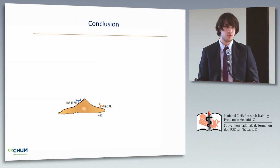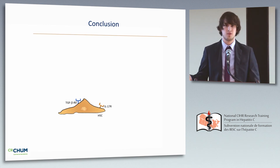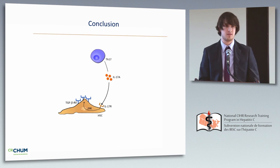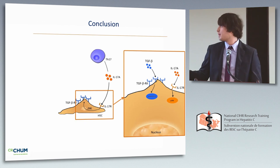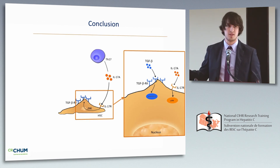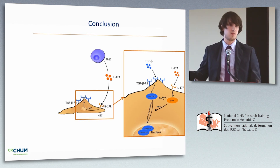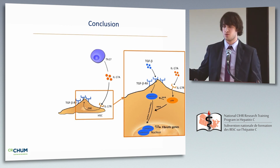In conclusion, we demonstrated that hepatic stellate cells can respond to IL-17A and will upregulate TGF-beta receptor 2 at the cell surface in a JNK-dependent manner. This allows hepatic stellate cells to respond to suboptimal doses of TGF-beta, with increased phosphorylation of SMAD-2 and 3, further enhanced by JNK activation. We also observe increased nuclear translocation dependent on JNK activation, leading to increased transcription of pro-fibrotic genes and increased fibrosis.